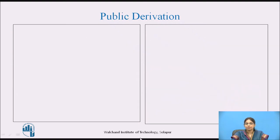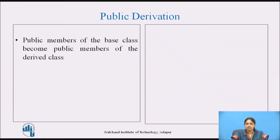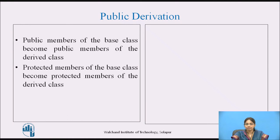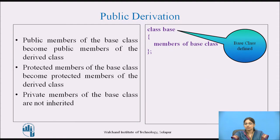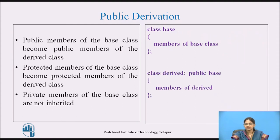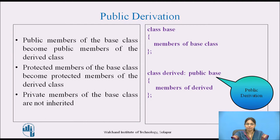In public derivation, all the public members of the base class become public members of the derived class. Protected members of the base class become protected members of the derived class. Private members of the base class are not inherited. The example shows a derived class defined with public mode of derivation.